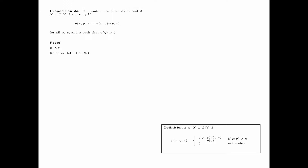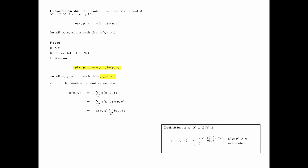Next, we prove the if part of Proposition 2.5. Referring to Definition 2.4 for x and z being independent conditioning on y, we assume that p(x,y,z) can be factorized as a(x,y) times b(y,z) for all x, y, and z such that p(y) is bigger than 0. Then for such x, y, and z, we have p(x,y) equals the summation over z of p(x,y,z), where p(x,y,z) equals a(x,y) times b(y,z) by our assumption. Now a(x,y) does not depend on z, so it can be moved outside the summation, giving a(x,y) times the summation over z of b(y,z).